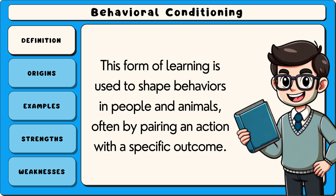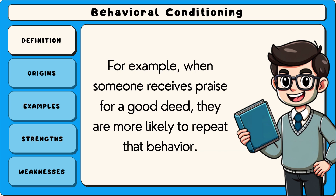This form of learning is used to shape behaviours in people and animals, often by pairing an action with a specific outcome. For example, when someone receives praise for a good deed they are more likely to repeat that behaviour.